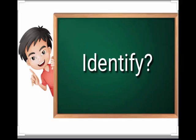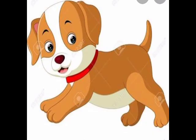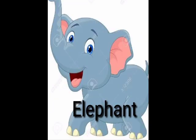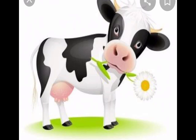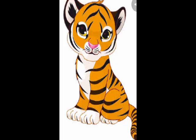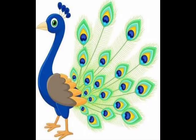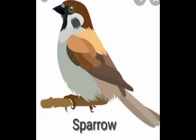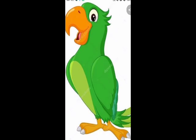Children, let's name a few birds and animals that you have seen. It is a dog. It is an elephant. This is a cow. And this is a tiger. This is a peacock. And sparrow. Parrot.